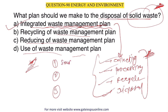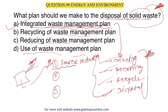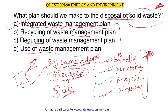The first strategy is source reduction — at the source side, when creating any product or project, we should reduce environmental pollutants from the source. The second is recycling — reusing waste products. If products are recyclable, recycle them. If not recyclable, then dispose of them. This is the best method of integrated waste management.